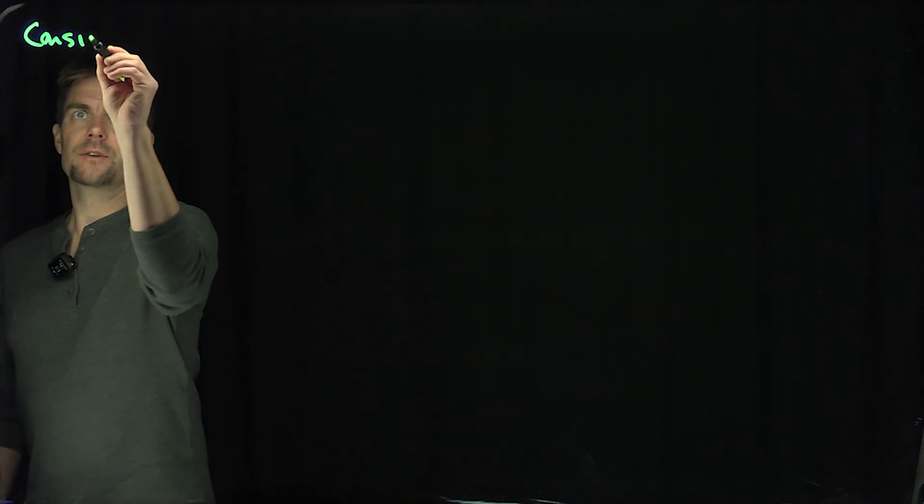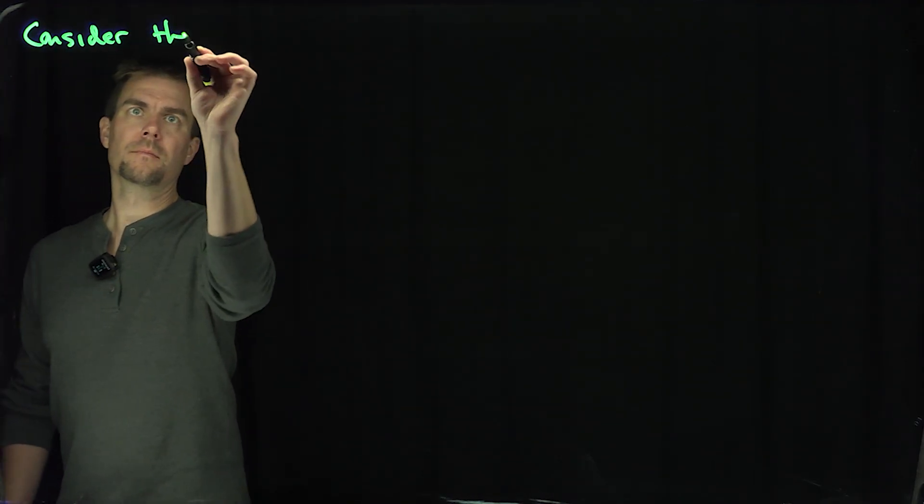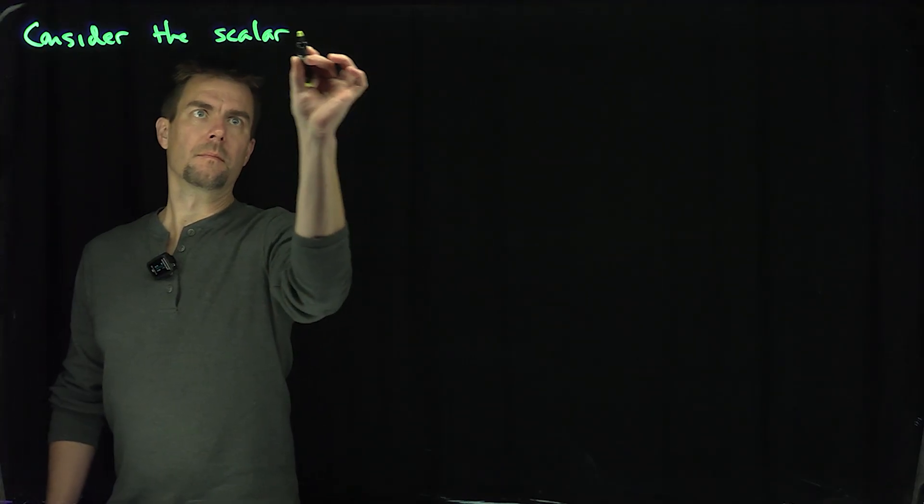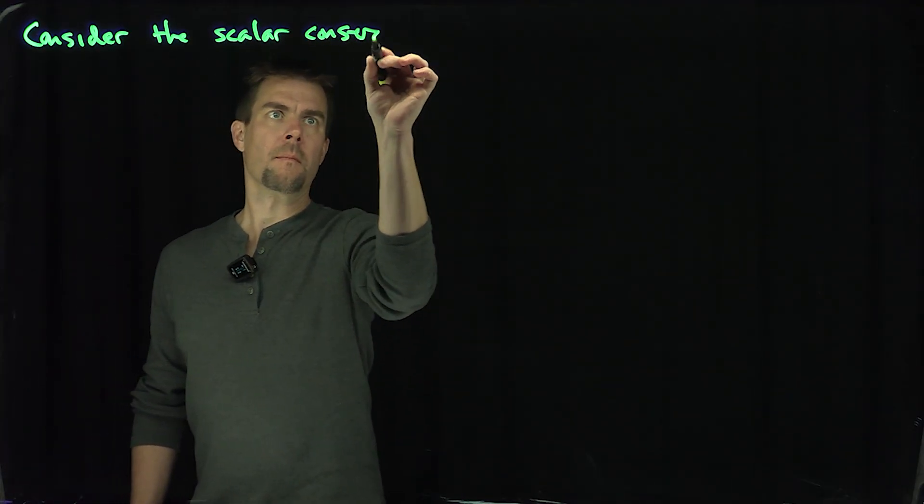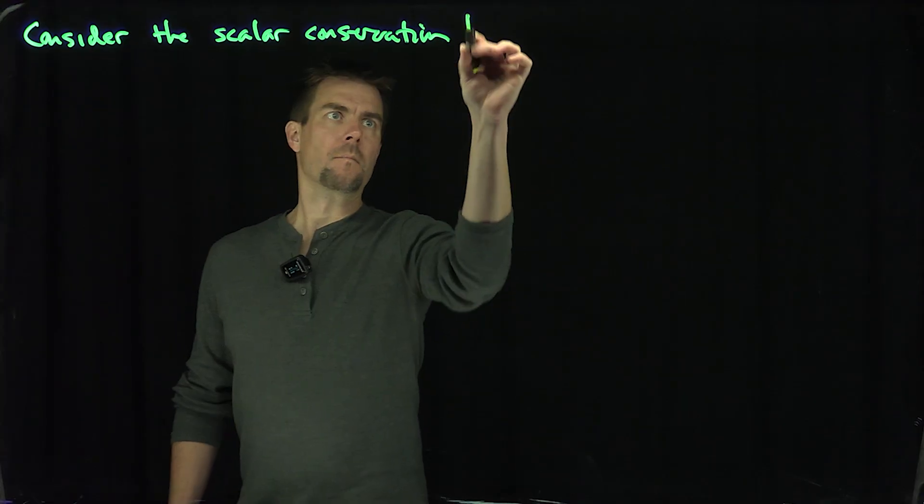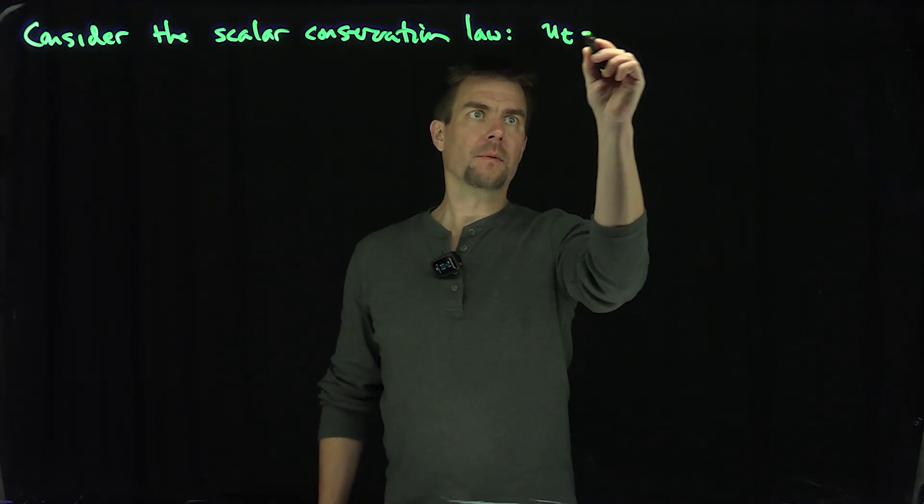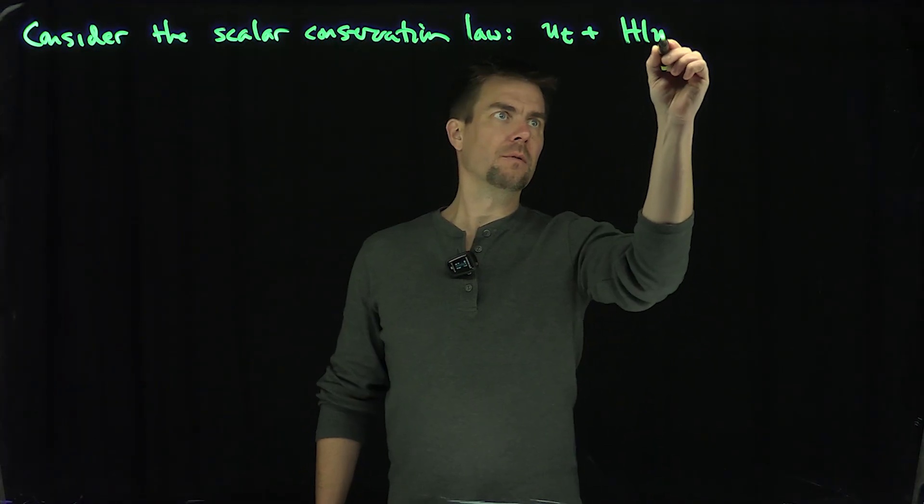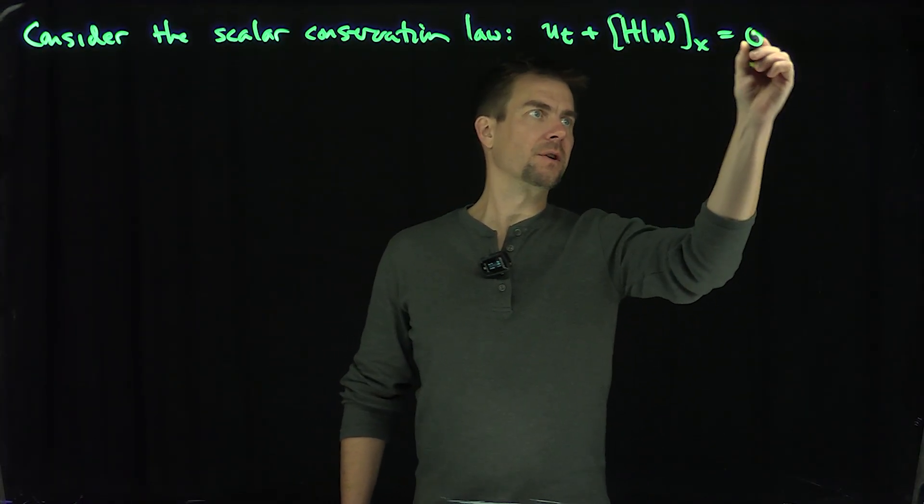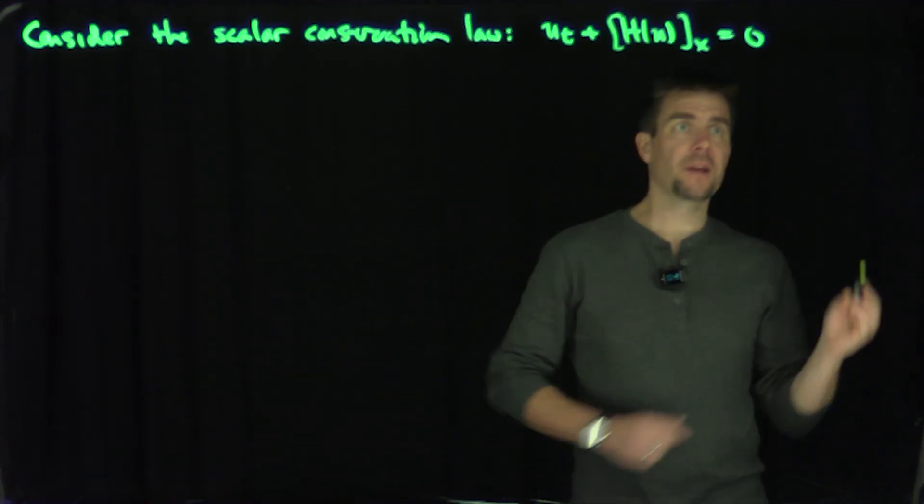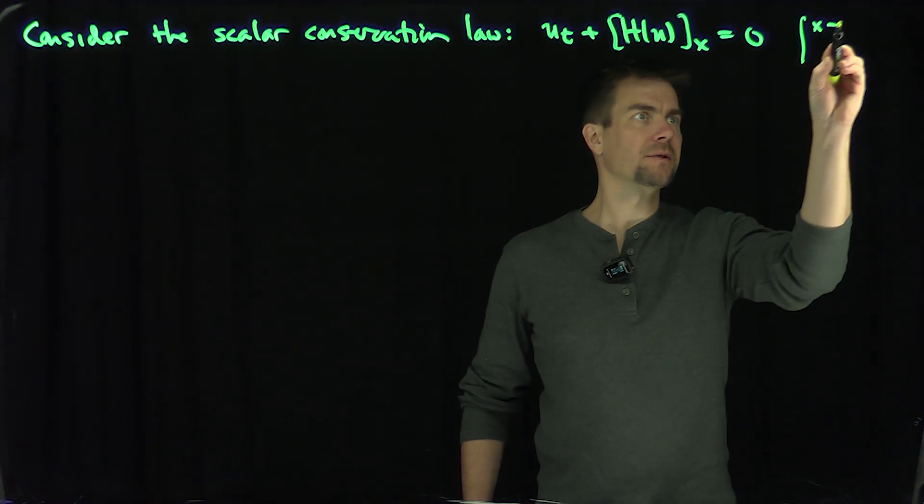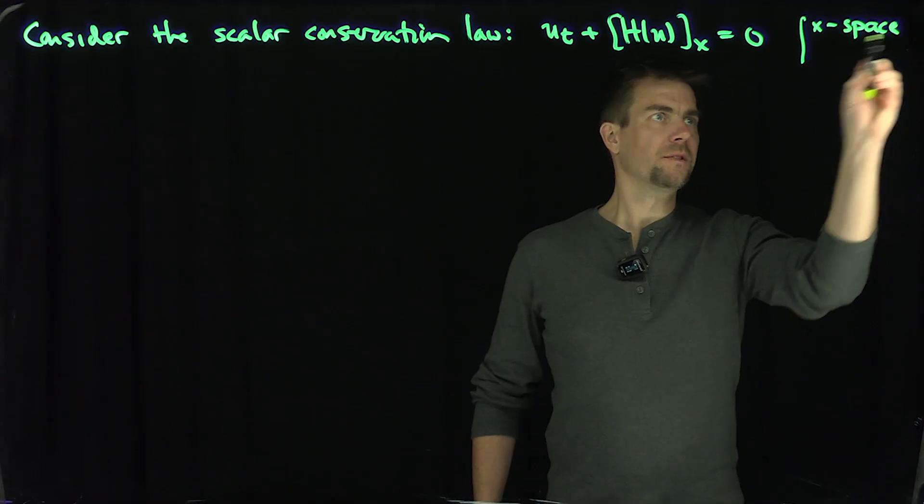Let's consider, again, our scalar conservation laws. We'll have u_t plus h(u)_x equals zero. Here we're thinking of x as space. Remember, x is space, t is time.